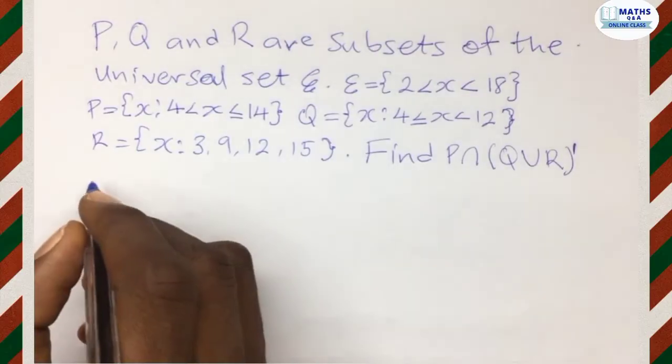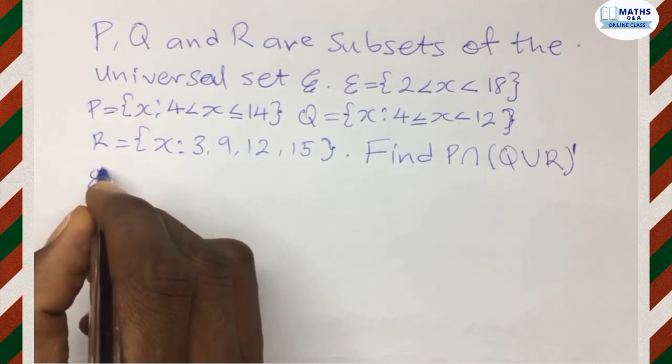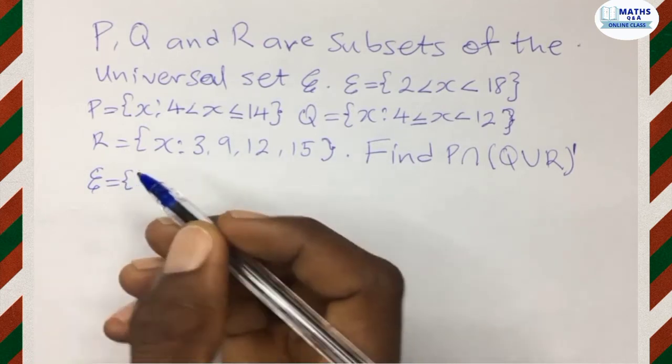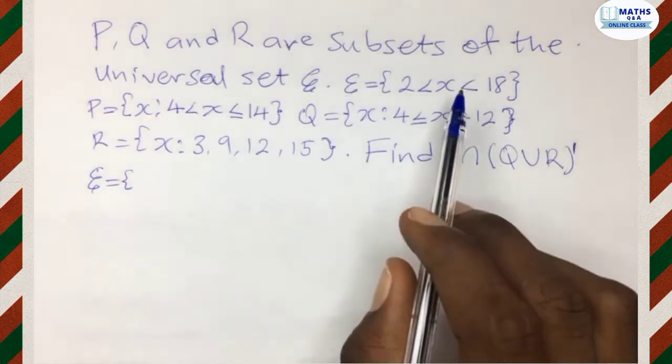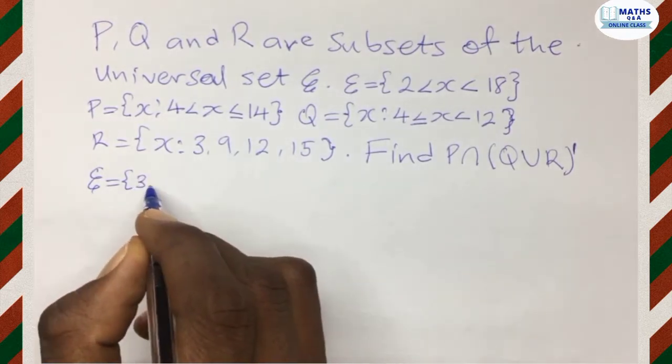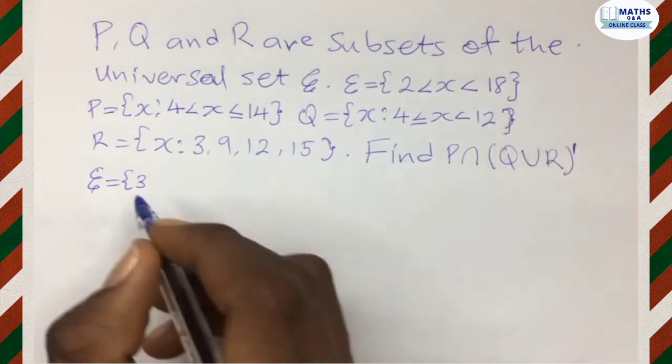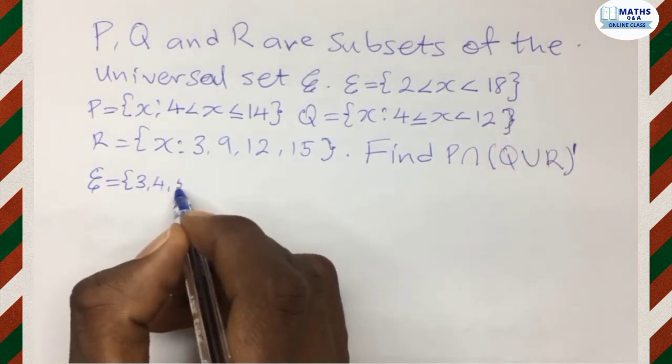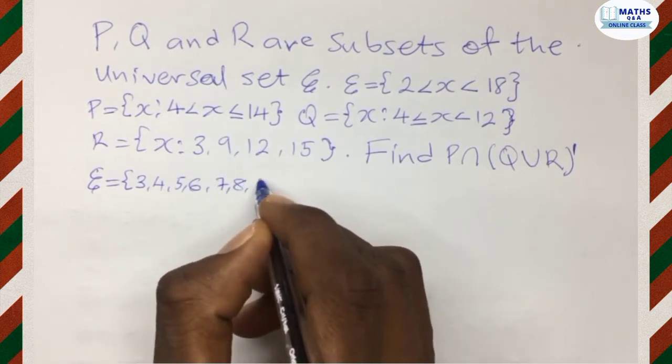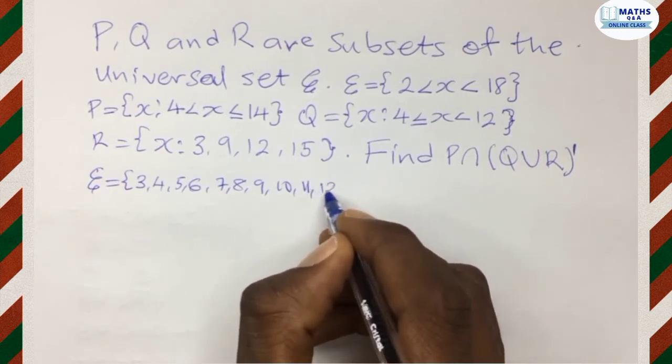Let's list the elements in the universal set first. We have x greater than 2, so 3 is greater than 2 and then x should be less than 18. So we have 4, 5, 6, 7, 8, 10, 11, 12,